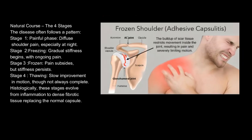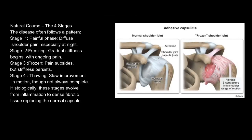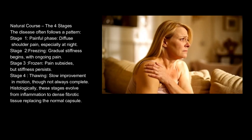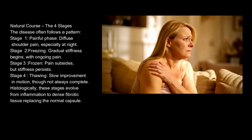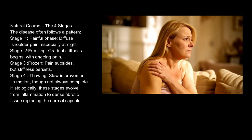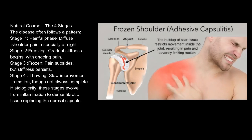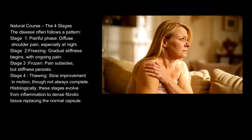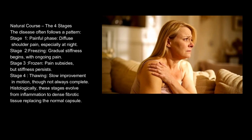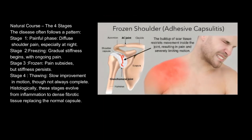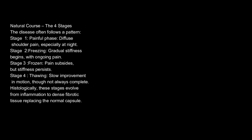Natural course — the four stages. The disease often follows a pattern. Stage 1, the painful phase: diffuse shoulder pain, especially at night. Stage 2, freezing: gradual stiffness begins with ongoing pain. Stage 3, frozen: pain subsides but stiffness persists. Stage 4, thawing: slow improvement in motion, though not always complete. Histologically, these stages evolve from inflammation to dense fibrotic tissue replacing the normal capsule.